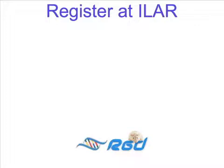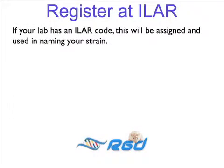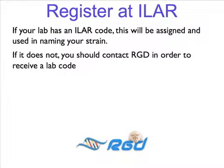Before we begin talking about the details of naming strains, I would like to point out the importance of registering your research group, lab, or institution at the Institute for Laboratory Animal Research, or ILR. If your lab has an ILR code, this will be used in naming your strain. If it does not, you should contact RGD in order to receive a unique lab code for your group or institution.